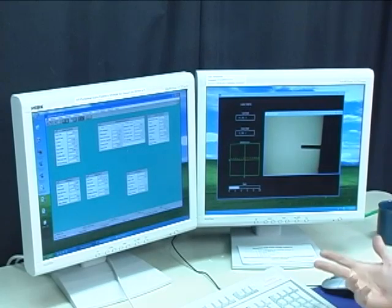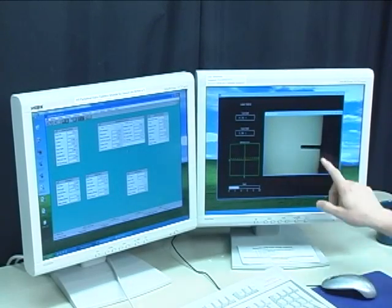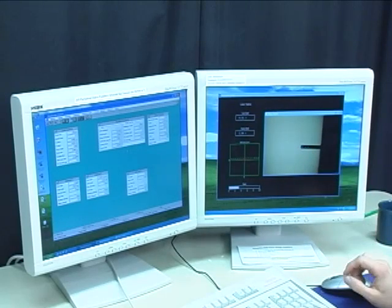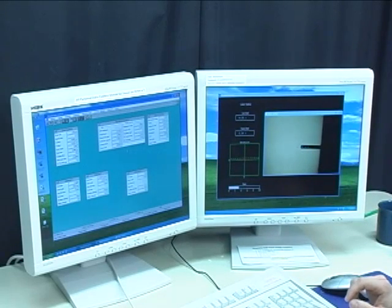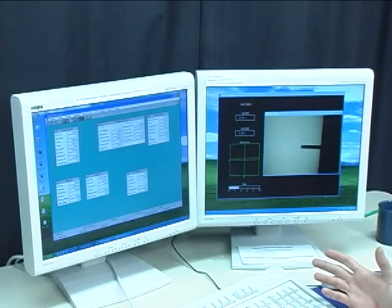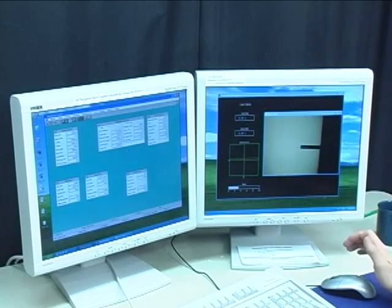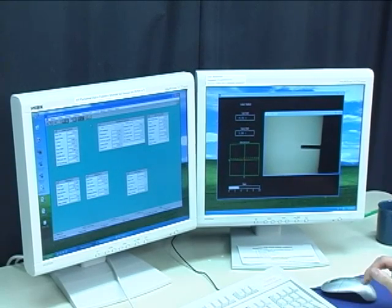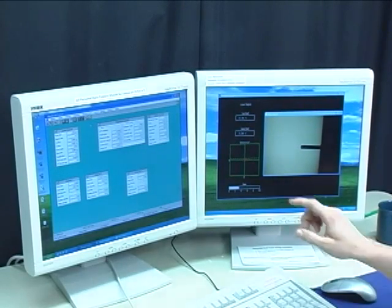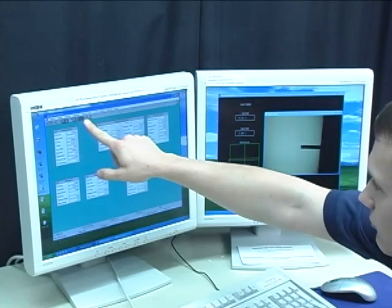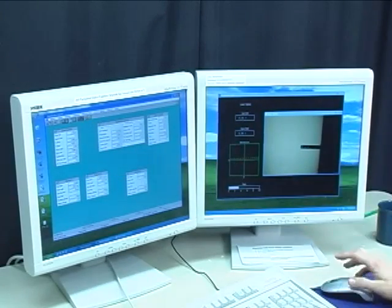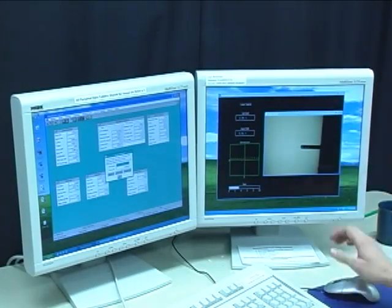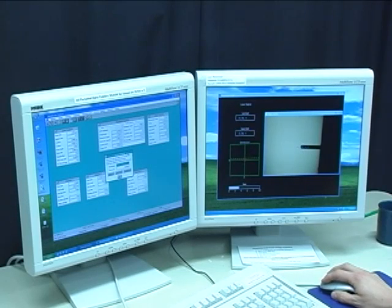So having focused the microscope on the AFM tip, we're now going to focus the microscope on the actual surface of our sample. And this is how the microscope actually aligns the tip very near to the surface without actually ramming into it by accident. So we'll start off by clicking on the focus surface icon.